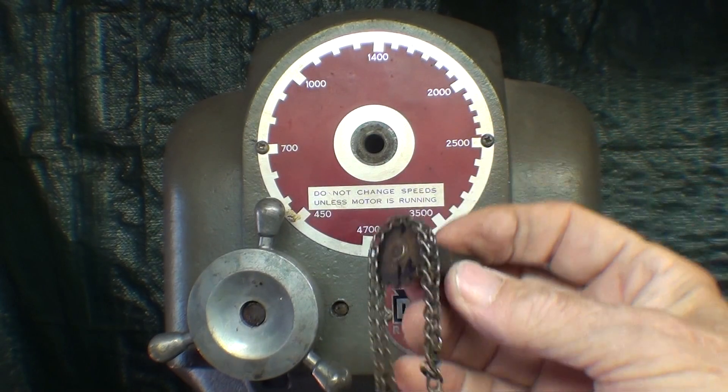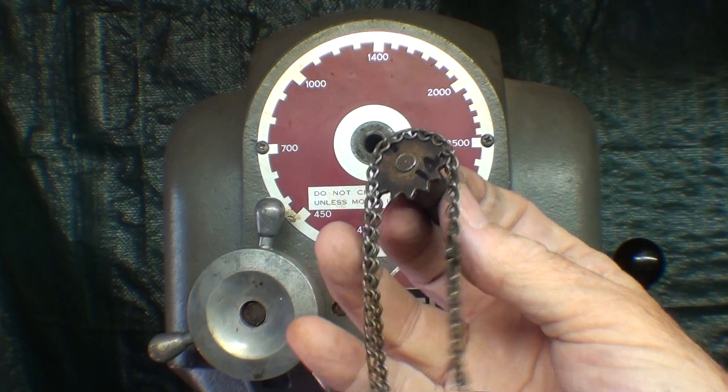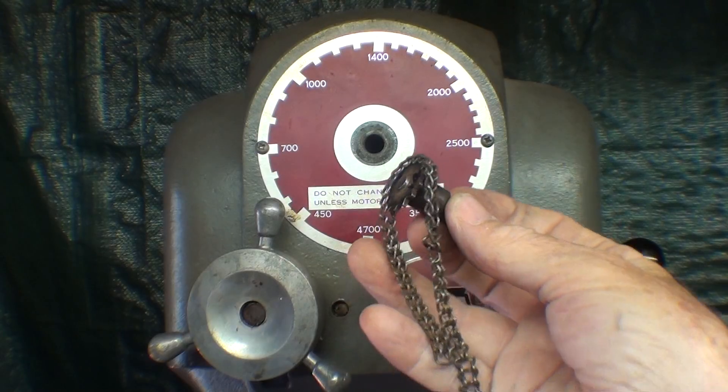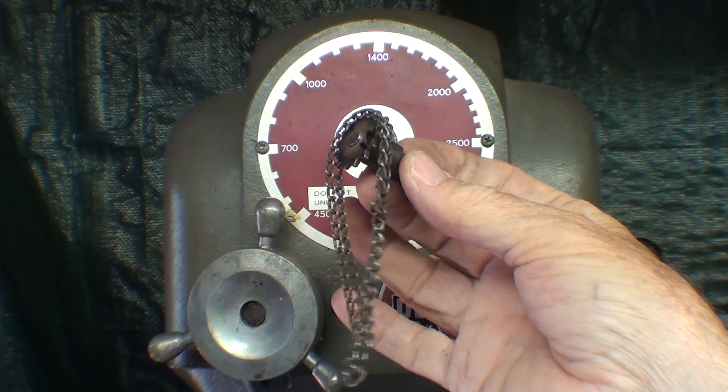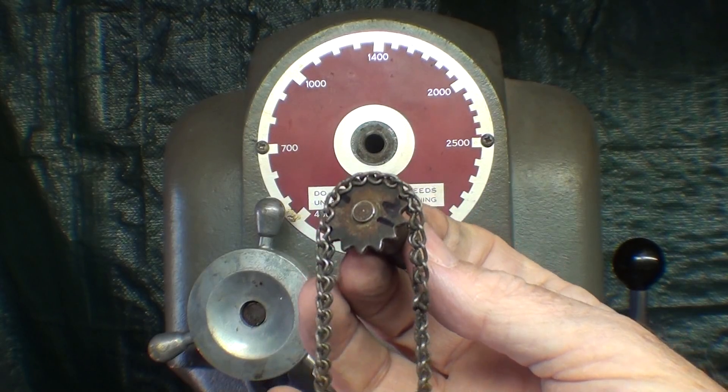One alternate for me would be to make two pulleys and use an O-ring or something like that as a belt. I'd have to retain the ratio, which is about 2 to 1.